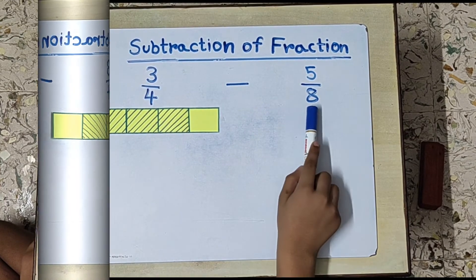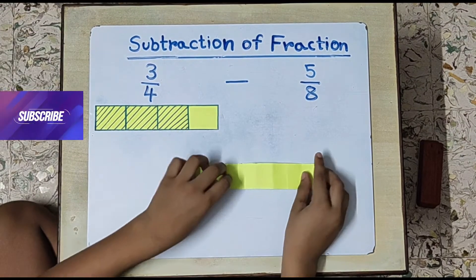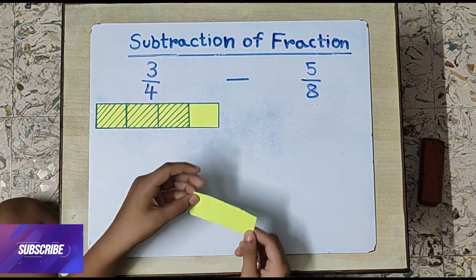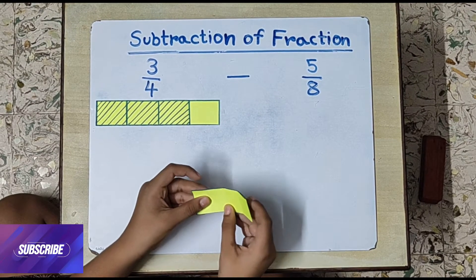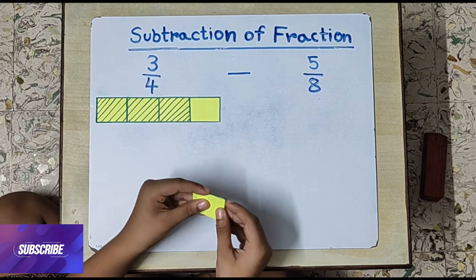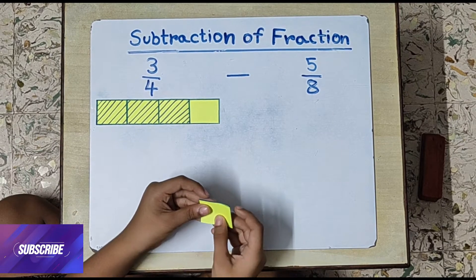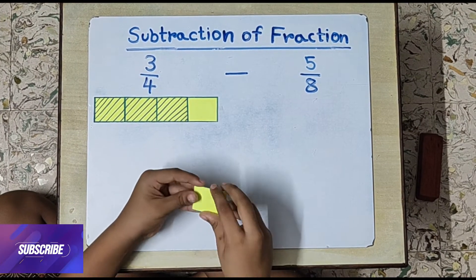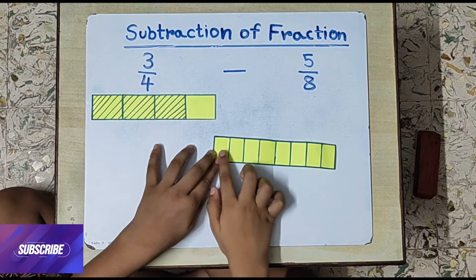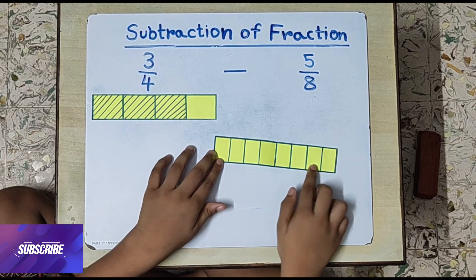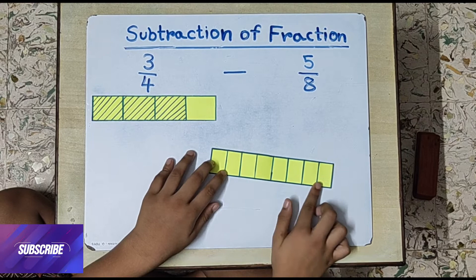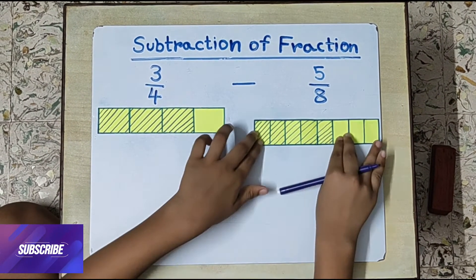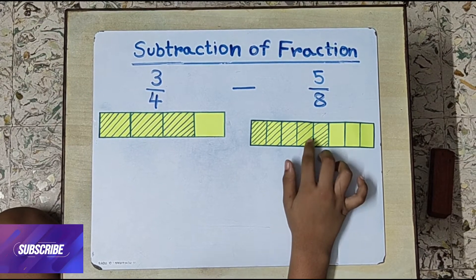Now we will represent 5 by 8 with the help of colored paper strips. As the denominator is 8, we will fold this paper strip into 8 equal parts. First we will make half. Now we have 2 equal parts. If we again make half, we get 4 equal parts. Then if we again make half of 4 equal parts, we get 8 equal parts. Now unfold the paper. We have 8 equal parts: 1, 2, 3, 4, 5, 6, 7 and 8. We will shade 5 parts out of these 8 parts because the numerator is 5. Now this colored paper strip represents 5 by 8.